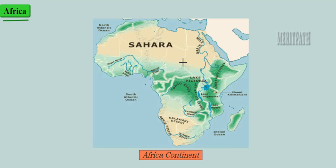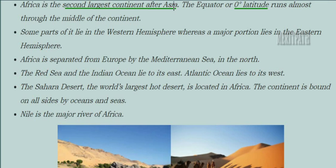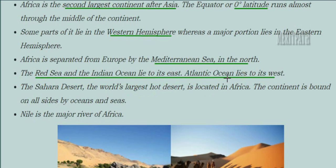Next let's see the African continent. Africa is the second largest continent after Asia. The equator runs through the middle of the continent — zero degrees latitude runs almost through its center. This continent lies in both the western and eastern hemispheres, with the major portion in the eastern hemisphere. Africa is separated from Europe by the Mediterranean Sea in the north, by the Atlantic Ocean on the west, and the Red Sea and Indian Ocean lie to its east.